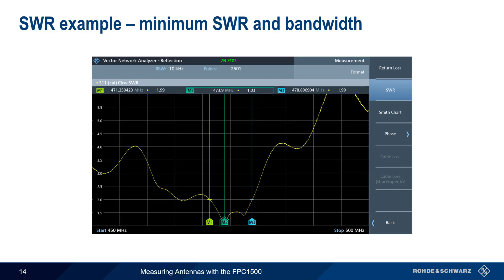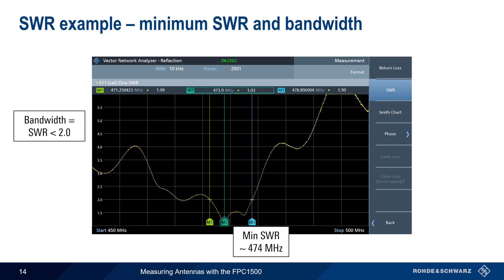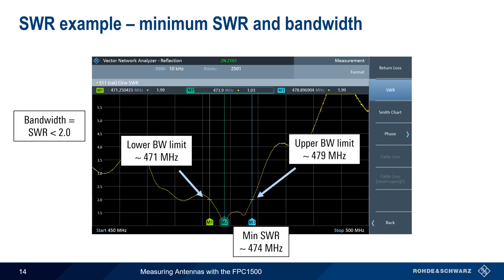Let's start by using markers to find the resonant frequency and bandwidth of this antenna. An antenna can be considered resonant at the frequency with the lowest SWR, which in this case is at approximately 474 MHz. We'll define our antenna bandwidth as the range over which SWR is less than 2. Using markers, we can determine the lower bandwidth limit of 471 MHz and an upper bandwidth limit of 479 MHz, meaning that our antenna has a bandwidth of approximately 8 MHz. Note that in this case, the bandwidth is not perfectly centered around the resonant frequency.